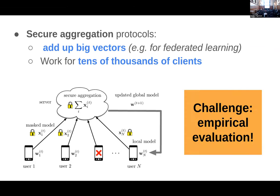The big challenge we're trying to address is: how do you empirically evaluate these protocols? Maybe if you work for Google you could get 10,000 phones and actually do an experiment to see how fast the protocol runs. I work at the University of Vermont, so there's no chance I'm going to get access to 10,000 phones or even 10,000 Amazon machines to run an experiment on one of these protocols at the scale they're designed for.